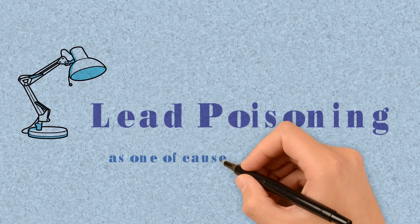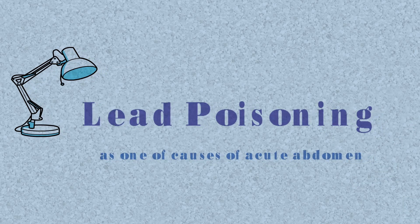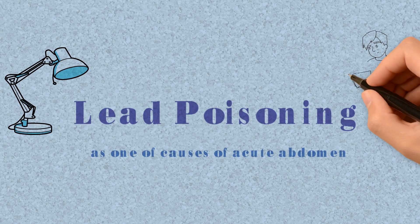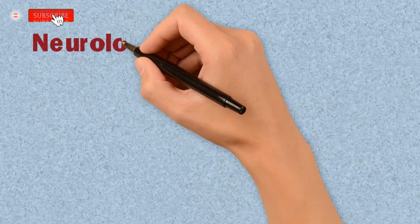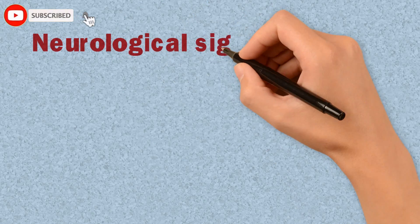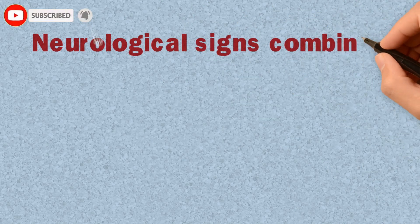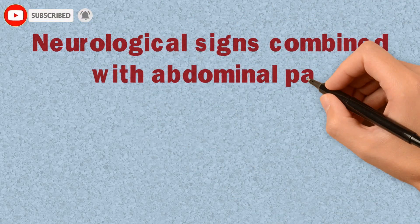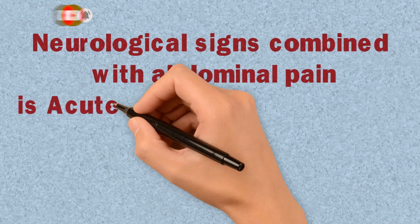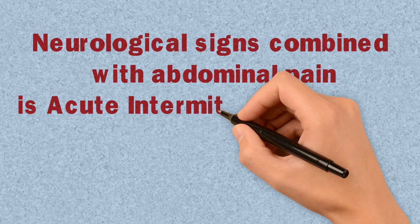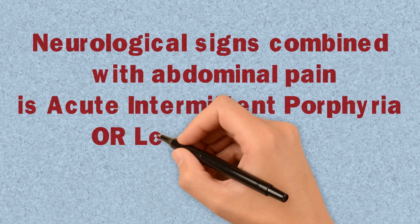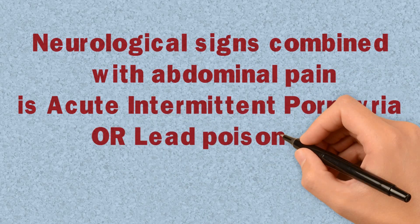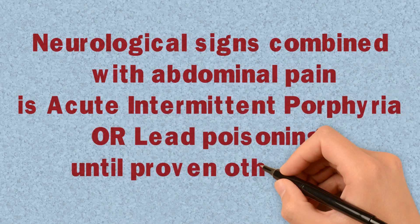Lead poisoning is discussed as one of the causes of acute abdomen. Neurological signs combined with abdominal pain is acute intermittent porphyria or lead poisoning until proven otherwise.